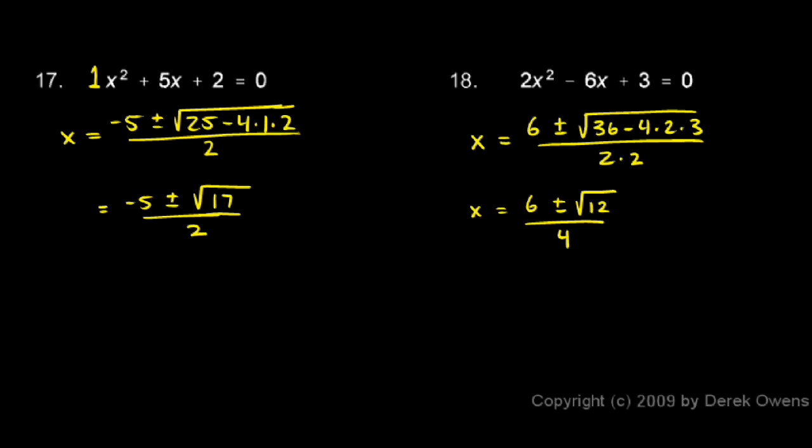So the square root of 12 can be written as 2 times the square root of 3. So I'll write it like that in my answer here. x ends up being 6 plus or minus 2 times the square root of 3 over 4.